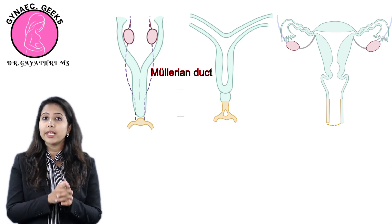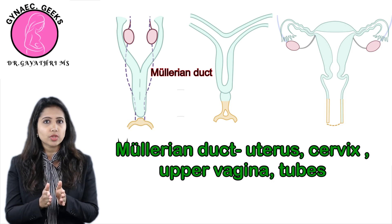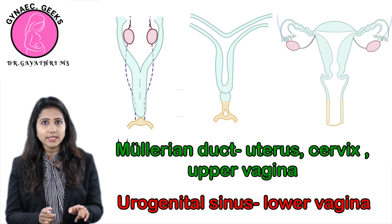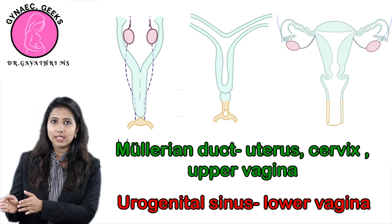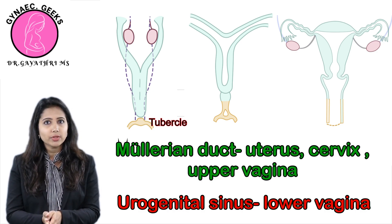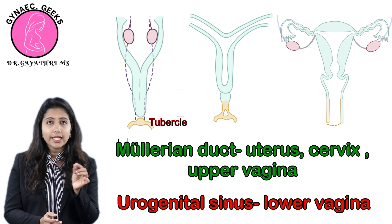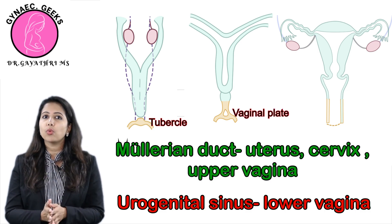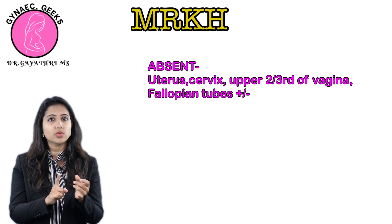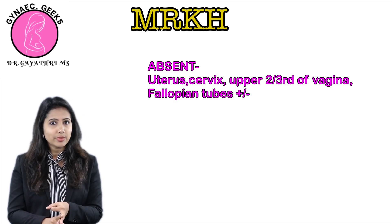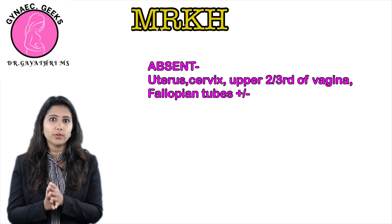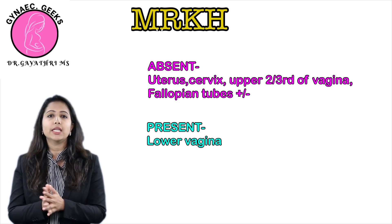If we have a look at this picture, the Mullerian duct leads to the development of the uterus, cervix, the upper two-thirds of the vagina, and the fallopian tubes. Whereas the urogenital sinus forms the lower one-third of the vagina — it develops into the Mullerian tubercle where it contacts the Mullerian duct, and this tubercle later forms the vaginal plate. As the Mullerian duct alone is abnormal, the uterus is absent, the cervix is absent, and the upper two-thirds of the vagina is absent. The fallopian tubes are usually absent but may be present in some women. The lower one-third of the vagina is present in these women.